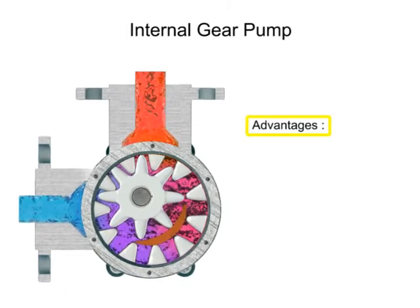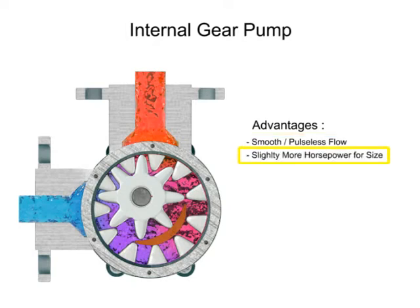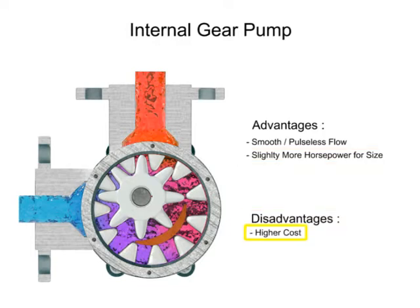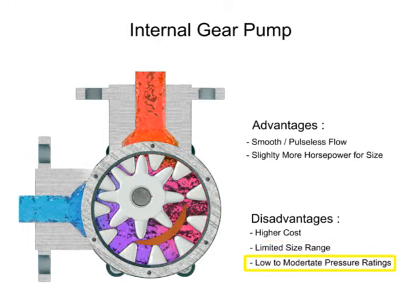Advantages of internal gear pumps are a smooth and almost pulseless flow and slightly more horsepower for its size. Disadvantages are its higher cost, limited size range, low to moderate pressure ratings, and few sources of manufacture.